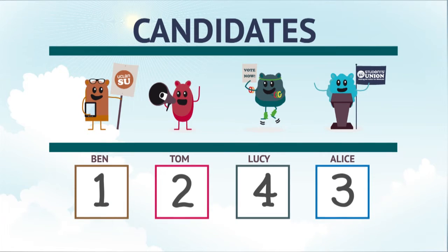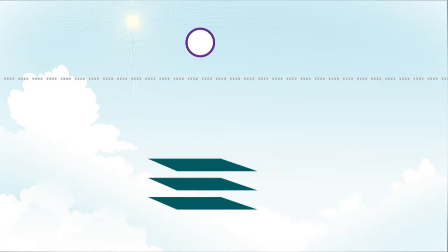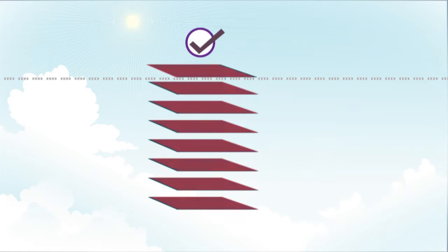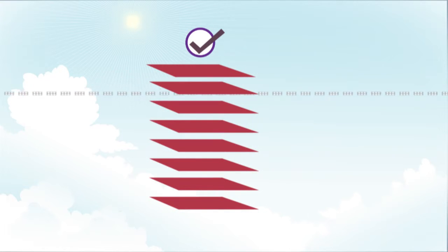To win, candidates must get a minimum number of votes. This number is called the quota and varies in each electorate depending on how many votes and how many candidates there are.